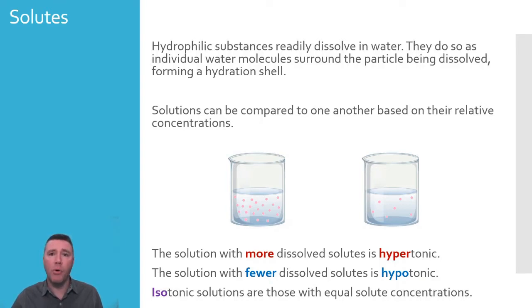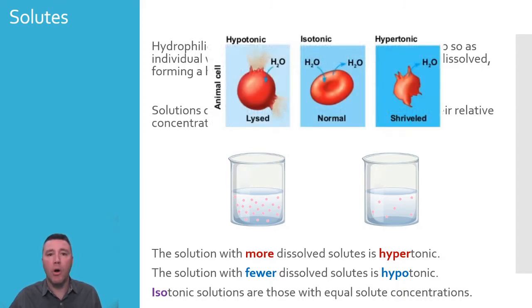At this point, it is important to note that these terms are relative terms, meaning that they must be utilized in a way that allows the comparison of two or more solutions to one another. For example, a red blood cell, when compared to a much more concentrated hypertonic solution, like salt water, would be considered hypotonic.